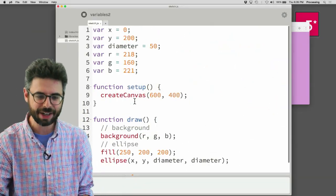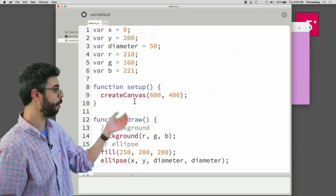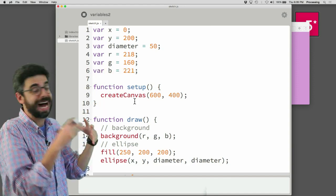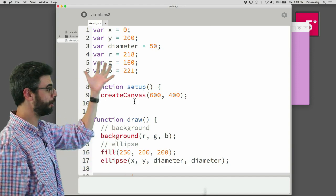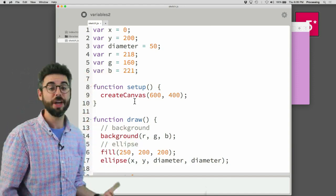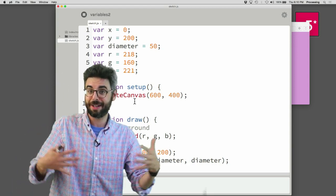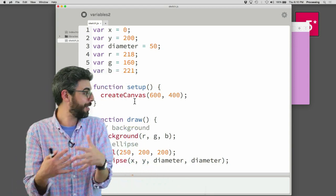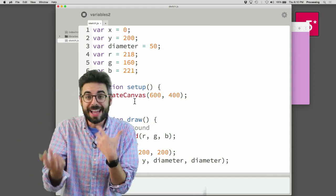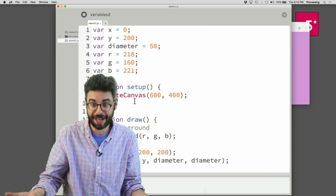Now one thing I did here is I added a whole lot of other variables. Let's have a Y and a diameter for the size of that circle, and RGB variables for the background. So maybe I could do some things like increment the red amount, decrement the green amount. And hopefully these are the kinds of things that you've been playing with.